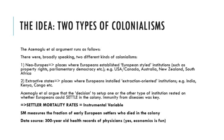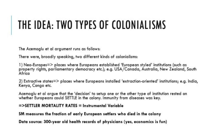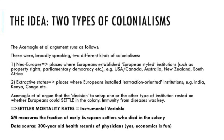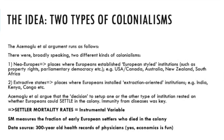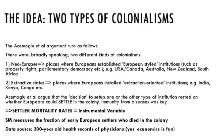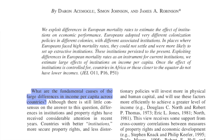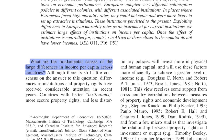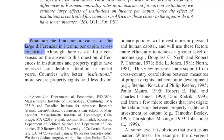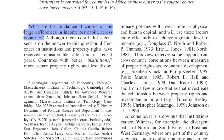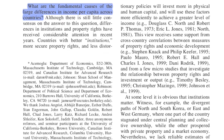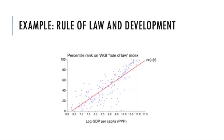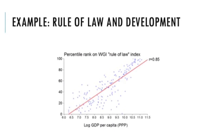Step two: what determined the choice of whether to settle or not? Acemoglu's answer, somewhat ironically, is geography — specifically, the disease environment. Europeans, he argued, could only settle in places where they had immunity to local diseases. So in a sense, Acemoglu confesses in the paper that geography matters, but it only matters in the beginning, not anymore. Current development depends on current institutions, which he says are endogenous, and hence subject to change.